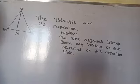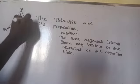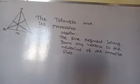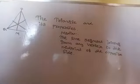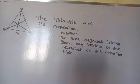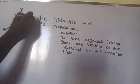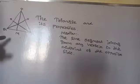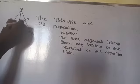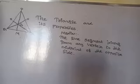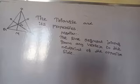The median is the line segment joining from any vertex to the midpoint of the opposite side. So we can draw three medians from vertex P, from vertex Q, and from vertex R. Where all three medians intersect, that point is called the centroid of the triangle.